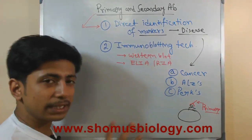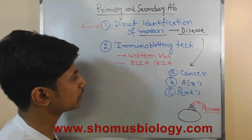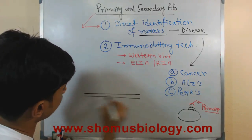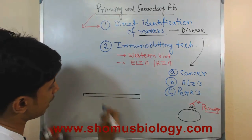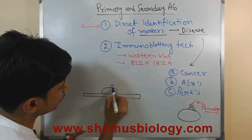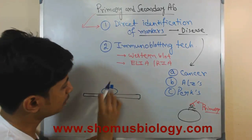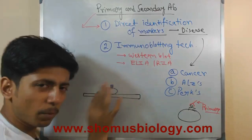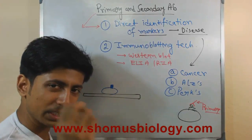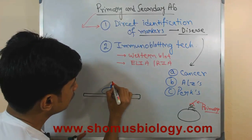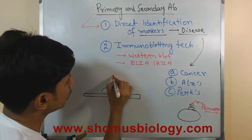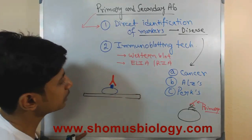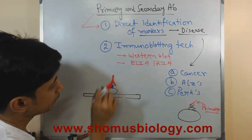When we use antibodies in immunoblotting techniques like western blotting or ELISA, let's say this is the slide and we have our cell. The protein of our interest is present in the blot on a nitrocellulose membrane in western blotting. That moiety is our target, and the antibody is going to interact with it. Whatever antibody interacts first is termed the primary antibody.